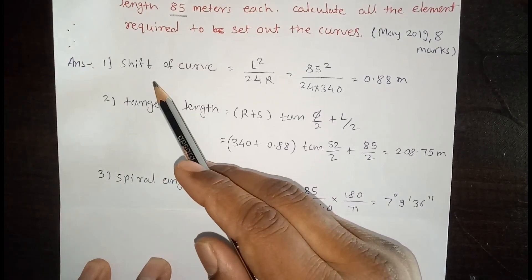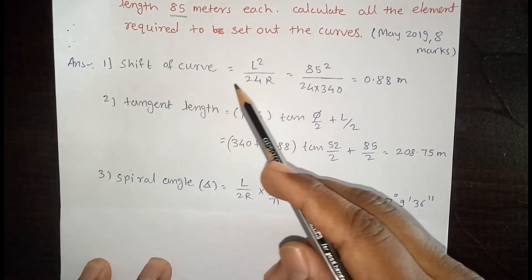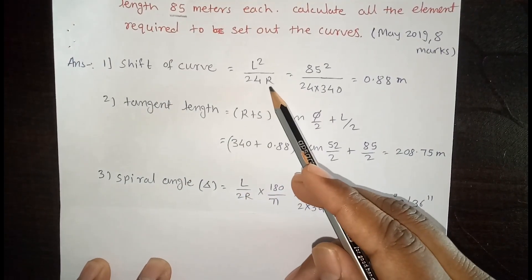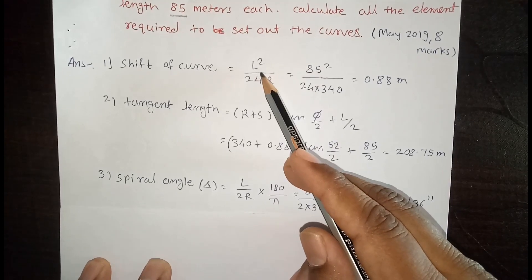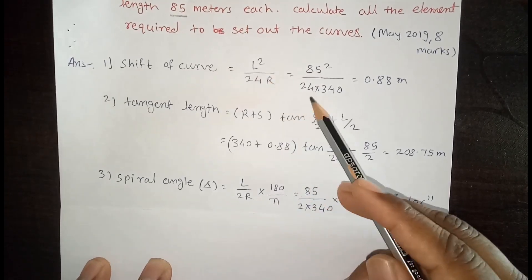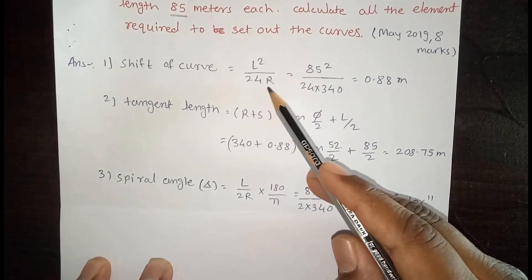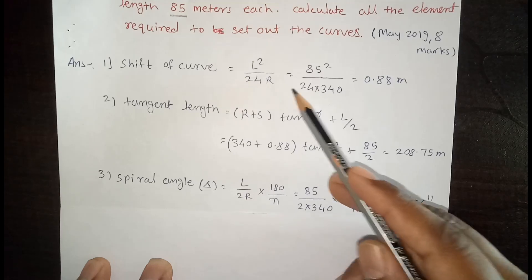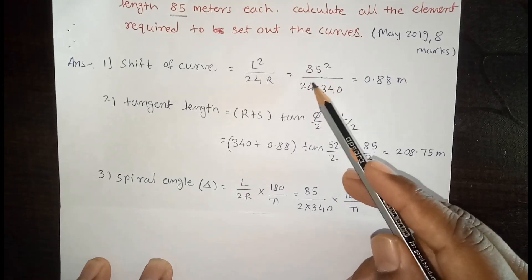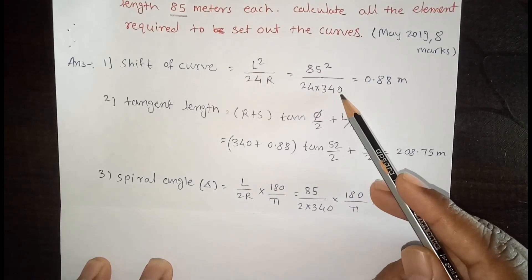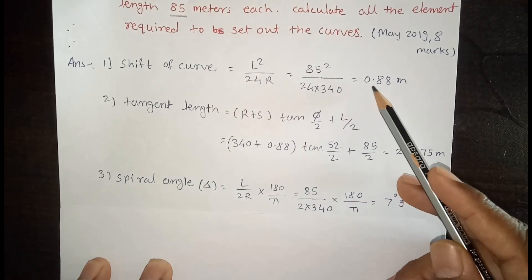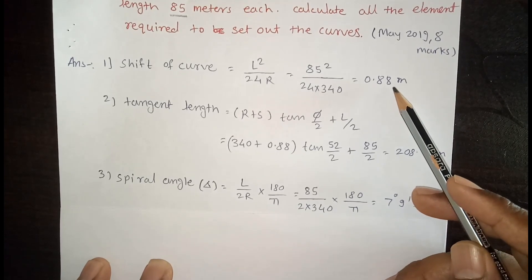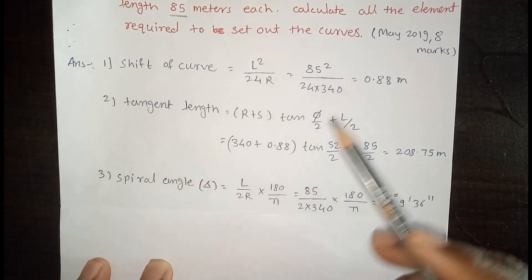The first design step is the shift of the curve, given by the formula S = L² / (24R), where L is the length of the transition curve. So: 85² / (24 × 340) = 0.88 meters. The shift of the curve is 0.88 meters.